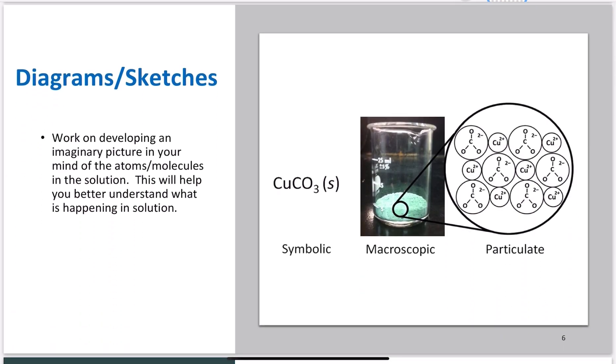One thing I really need you to start working on is developing the mental picture of what's going on in solution. Work on developing that imaginary picture in your mind of the atoms and molecules in the solution. This will help you better understand what is actually happening. So here I have copper(II) carbonate. If I look at it, it just looks like a pale green crystalline compound - I can tell it's a solid.